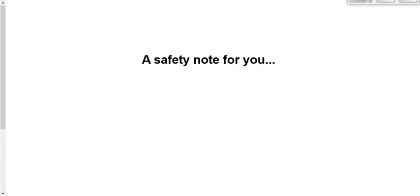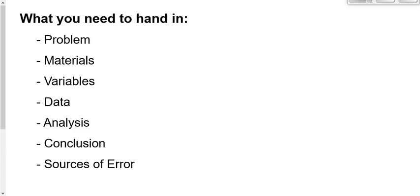For the lab report on Google Classroom, you need: a problem statement, materials, variables (manipulated, responding, and one or two key control variables), your data table of theta one and theta two, your analysis table of sine theta one and sine theta two, your graph, your conclusion, and two or three good sources of error with suggestions for improvement.